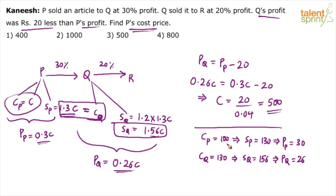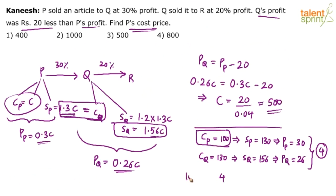When C = 100, profit of P is 0.3 × 100 = 30, and profit of Q is 0.26 × 100 = 26. The difference is 4. But the question says the difference should be 20. So using proportionality: if cost price 100 gives a difference of 4, then for a difference of 20 the cost price must be 5 × 100 = 500.